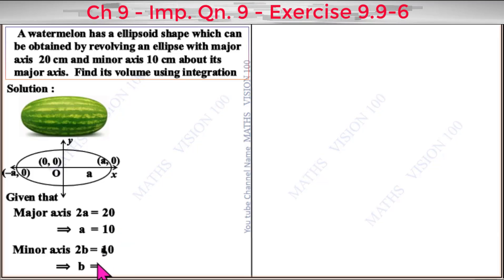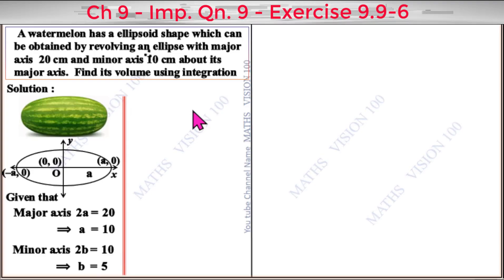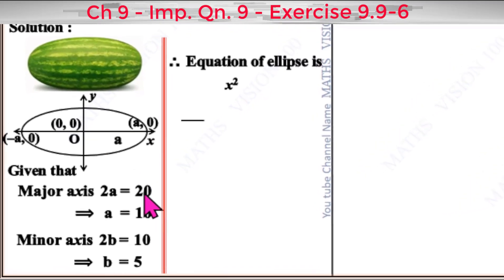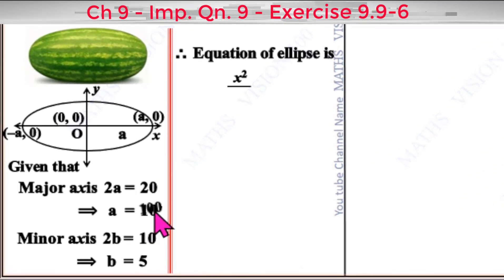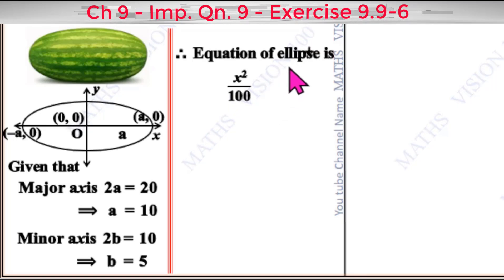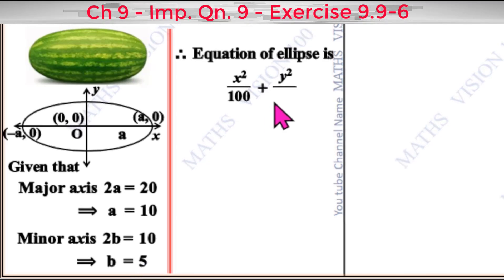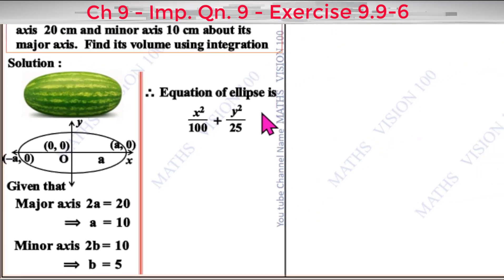The equation of the ellipse is x²/a² + y²/b² = 1, that is x²/100 + y²/25 = 1.